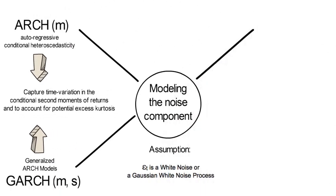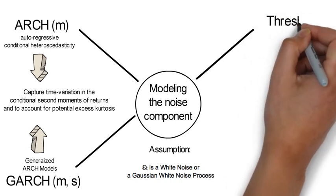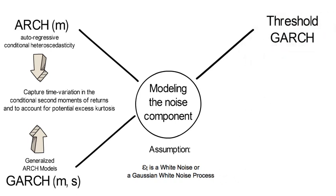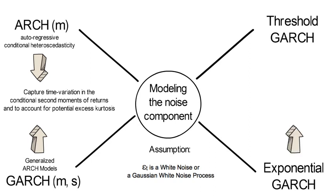Because these approaches do not capture asymmetries in returns, such as skewness, we also introduce the threshold GARCH and the exponential GARCH models, which are further generalizations to also allow for negative and positive return skewness.